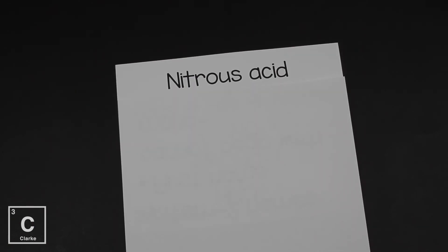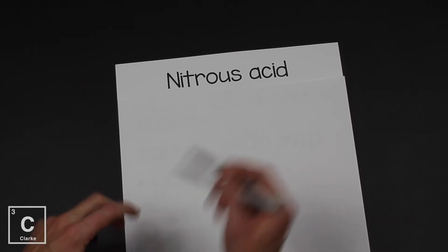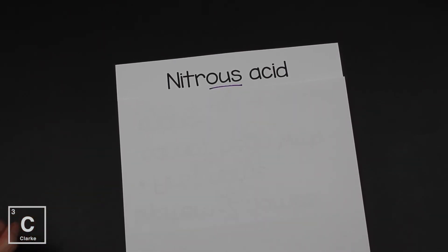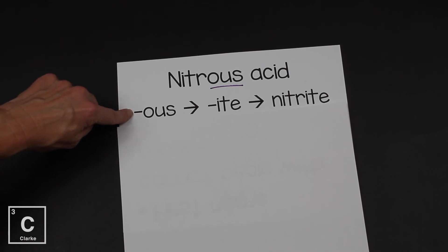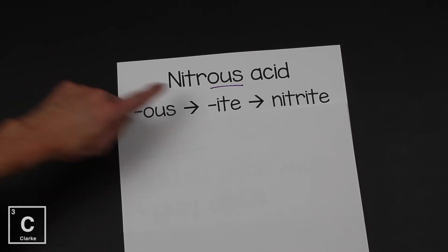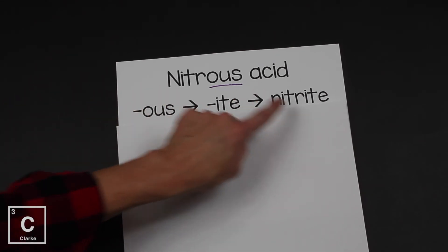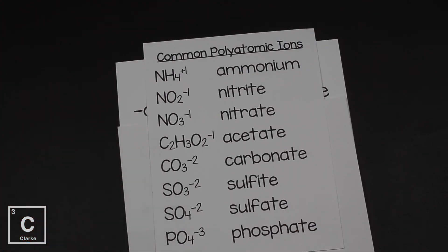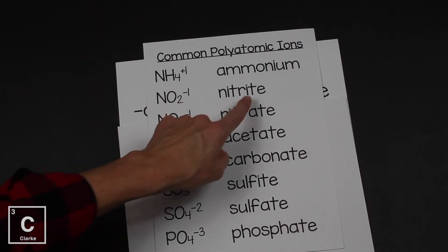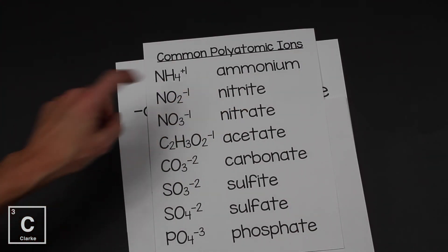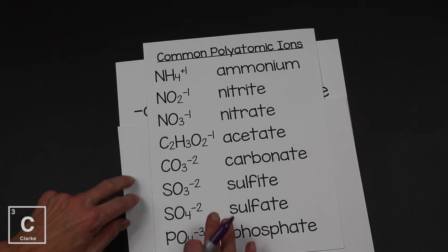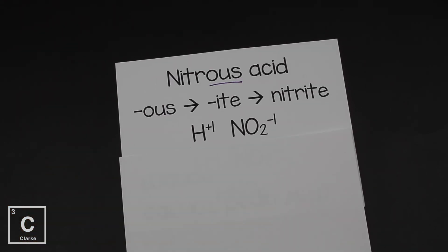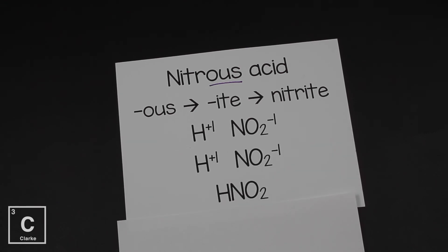Let's look at one more example: nitrous acid. We need to notice -ous. OUS means that the polyatomic ion ended in -ite. So that would be nitrite. If we look on our polyatomic ion chart, nitrite is NO₂ with a minus one charge. So we have H with a plus one and nitrite with a minus one. Again, a one-to-one ratio. So we have HNO₂.